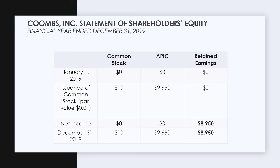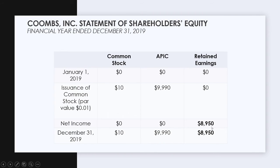That net income rolls into our retained earnings. Our net income has decreased, which then goes into our retained earnings and decreases our ending balance of retained earnings. On our statement of shareholders' equity, common stock and APIC don't change — there hasn't been any other funding — just our retained earnings decreases by net income from operations.